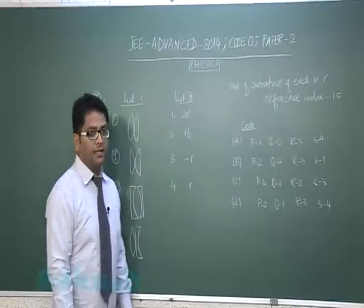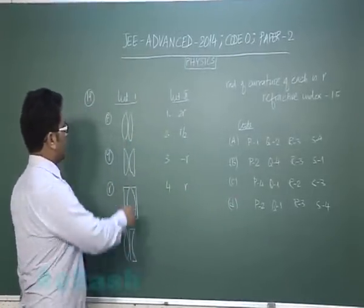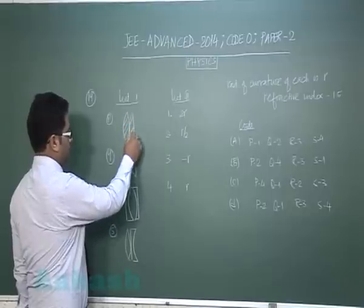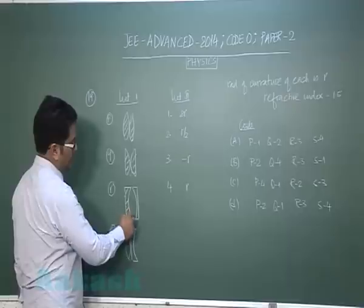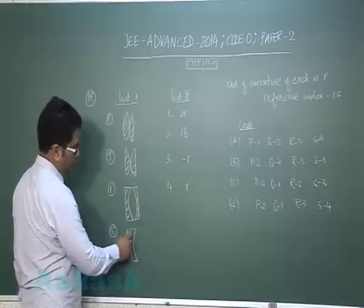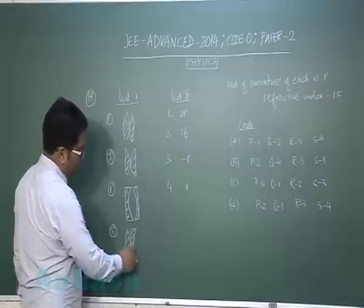Question number 19 is from ray optics. List 1 gives combinations of thin lenses: equiconvex, planoconvex, planoconcave, and an equiconvex and a planoconcave.